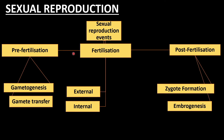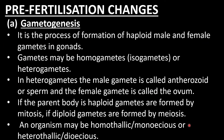These are the events occurring during sexual reproduction: pre-fertilization, fertilization, and post-fertilization, each having sub-events. We will study them one by one. The first pre-fertilization event is gametogenesis — 'genesis' means formation. It is a process of formation of haploid male and female gametes in gonads.